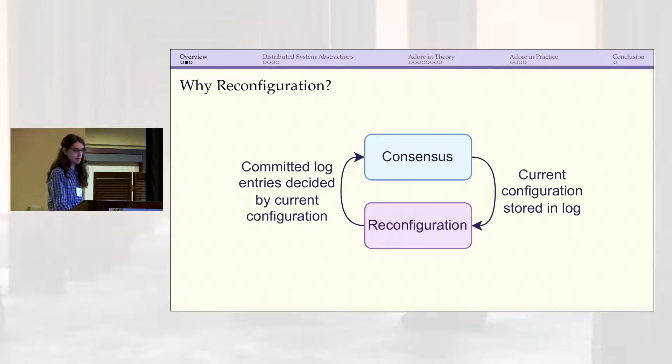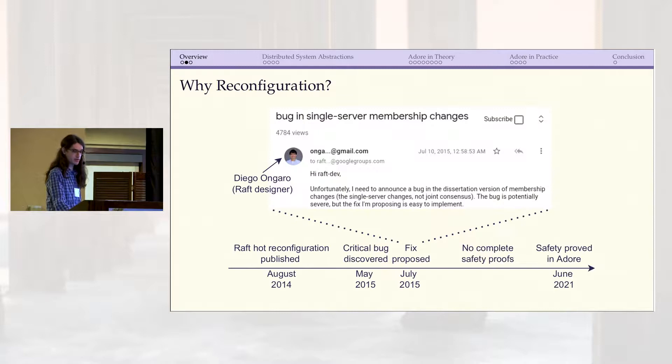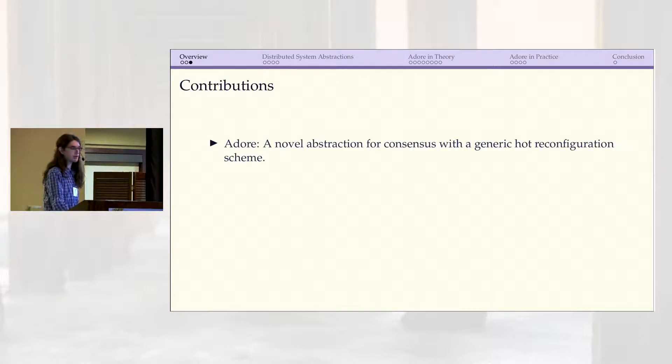That creates some deep implications for the safety argument that can be fairly difficult for even experts to fully grasp. For example, the designer of the Raft protocol proposed a hot reconfiguration algorithm, but a year later, a critical safety bug was found with it, and a fix was eventually proposed. But it's clear that without a rigorous proof, we can never really have complete confidence in the safety of these reconfigurable consensus protocols. That's why it's interesting that despite its importance, before ours, there are no complete safety proofs that we're aware of that really fully address reconfiguration. I claim that's at least partly because without the right abstraction, it can be fairly difficult for existing proofs to scale with the extra complexity from reconfiguration.